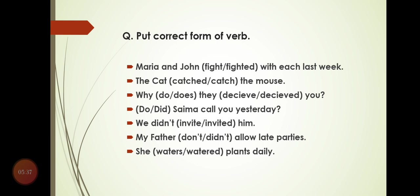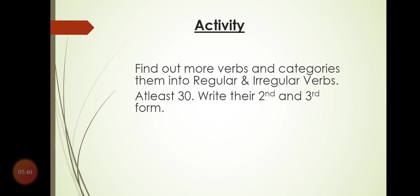For the activity, find at least 30 verbs and categorize them into regular and irregular verbs. Write the second and third form of each. Fifteen verbs should be regular and the other fifteen should be irregular. Make a heading for regular verbs, write 15 verbs with their second and third forms, then do the same for irregular verbs. This simple activity will definitely increase your knowledge and strengthen your grammar.